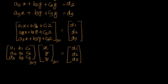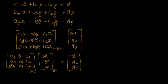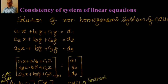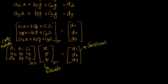Looking at the equations, a1b1c1, a2b2c2, a3b3c3 are the coefficients of the variables, so that matrix is called the coefficient matrix. The matrix [x, y, z] contains the variables, so it is called the variable matrix. d1, d2, d3 are constants, so that is the constant matrix. This gives us the format A × X = D, where A is the coefficient matrix, X is the variable matrix, and D is the constant matrix.